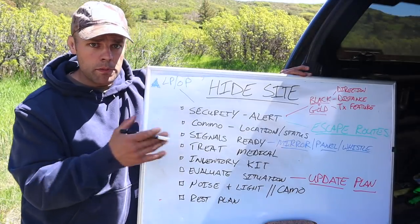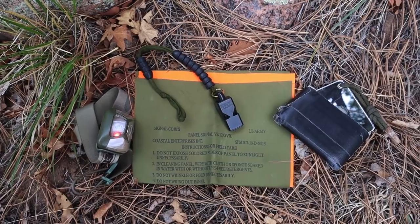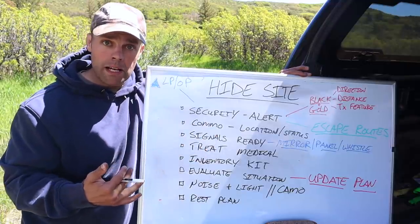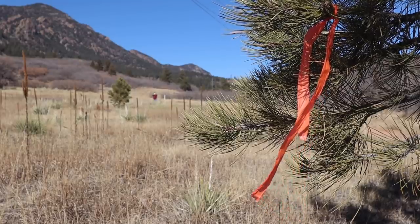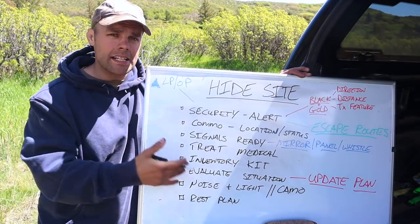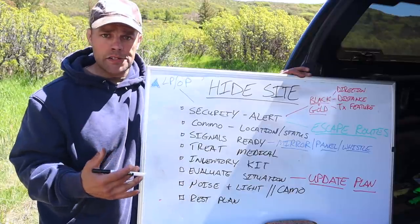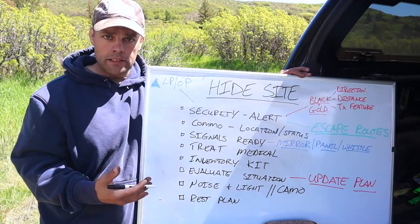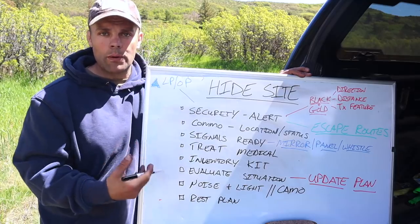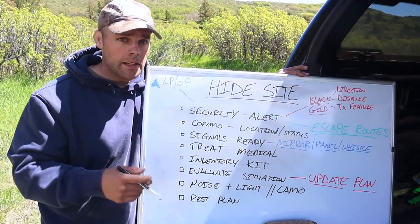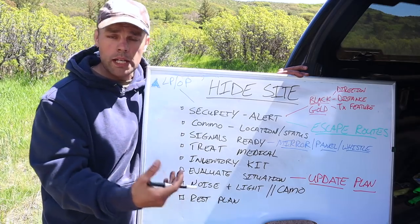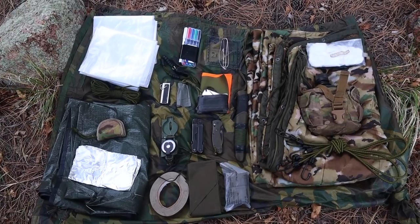Next priority is signals — these should be ready at all times during the evasion process and should be part of our survival kit: mirrors, panels, flares, whistles ready to go at a moment's notice in the event recovery forces are inbound. We can signal them to our location, recover, and prevent the rest of the evasion process. Next is treating casualties — at the hide sight we can now take the time to effectively treat casualties. During immediate actions and initial movement we may have only been able to apply a bandage quickly or a tourniquet and continue movement to prevent capture; but at our hide sight we can actually treat casualties properly. Our next step is inventorying our kit — during immediate actions and initial movement we may not have been able to inventory what's in our kit. We can inventory items and distribute them amongst the group so everybody has survival items on them.